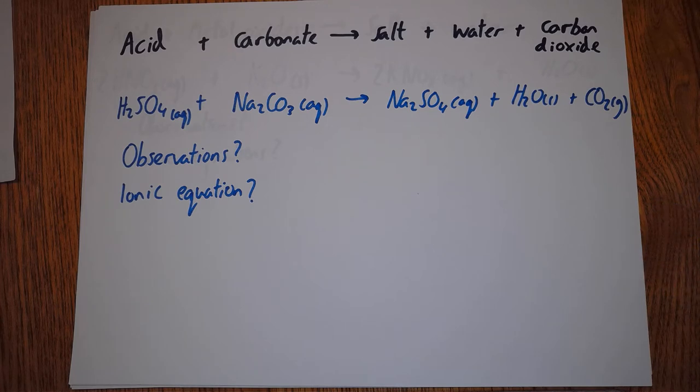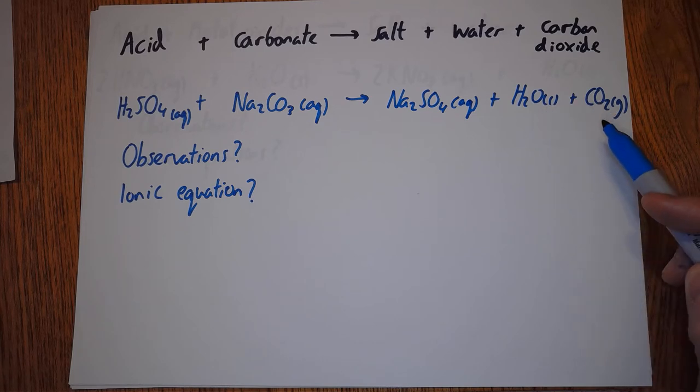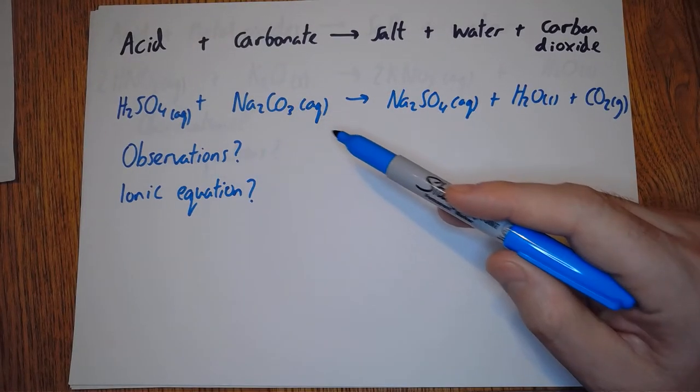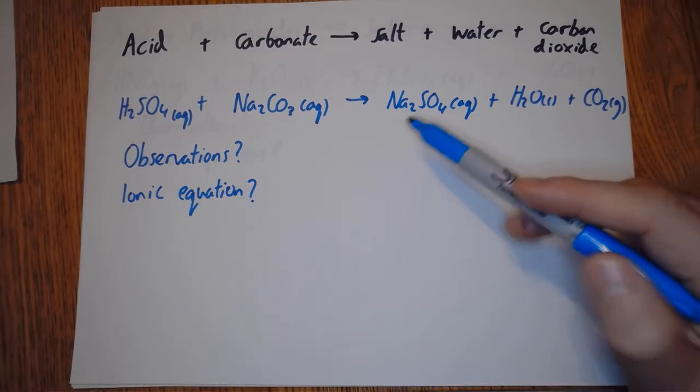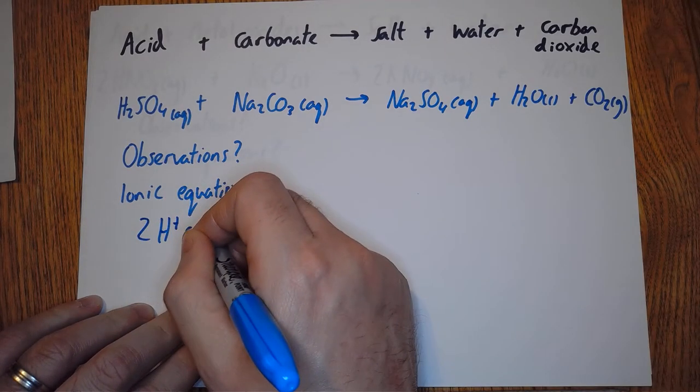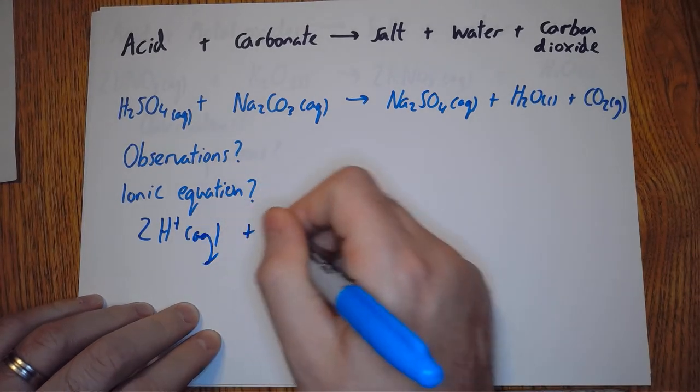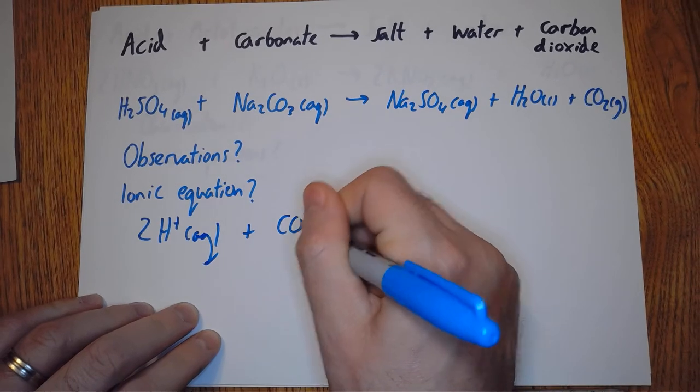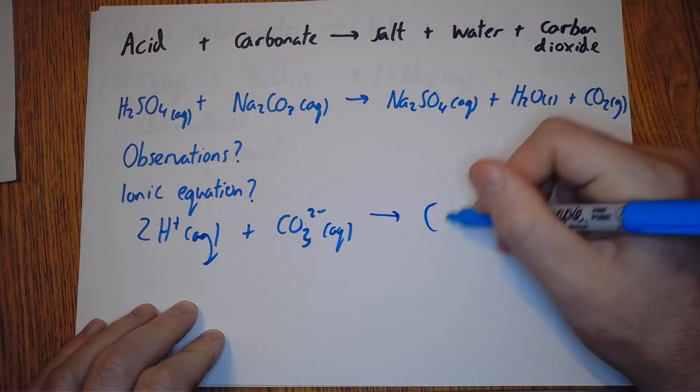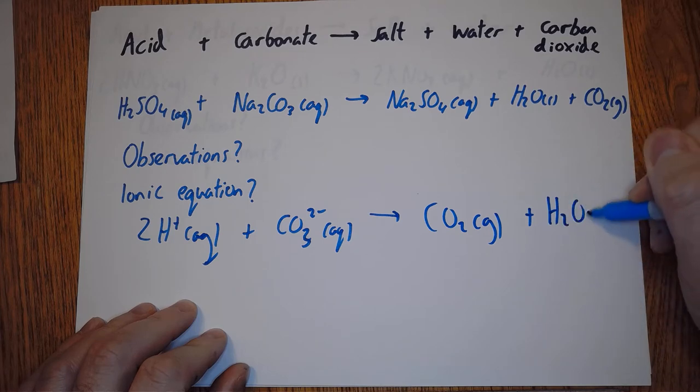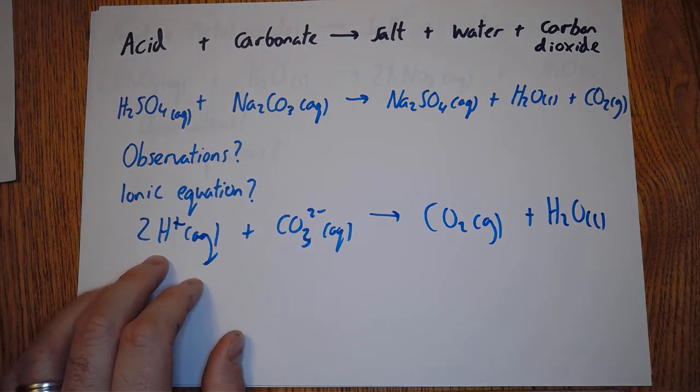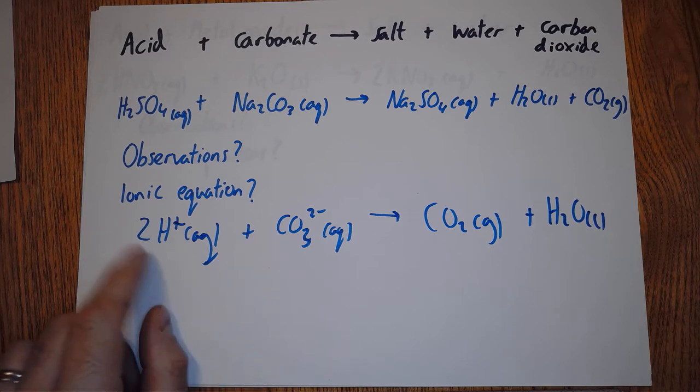Ionic equation - what can we split up? We can't split up the water, we can't split up the CO2. The sodium ions are on this side aqueous and they're on this side aqueous, so they won't be in the ionic equation. The sulfate ions are aqueous over here and aqueous over there, so they won't be in the ionic equation. So what do we have? We have 2H+ plus CO32- ion, and that reacts to make CO2 gas and H2O liquid. So acid, which is where the H+ ions come from, reacts with a carbonate to make carbon dioxide and water.